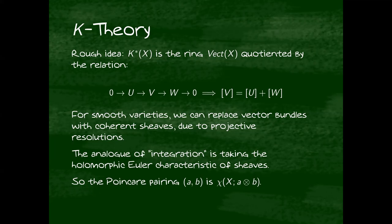So K-theory is roughly a ring defined by starting with this Grothendieck group of vector bundles and imposing the relation that bundles are additive along short exact sequences. Another thing that this means is that if your variety X is smooth, we can also treat this as based on the Grothendieck group of coherent sheaves instead of vector bundles.